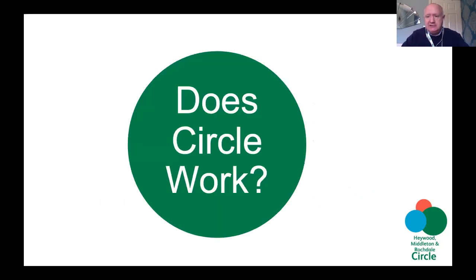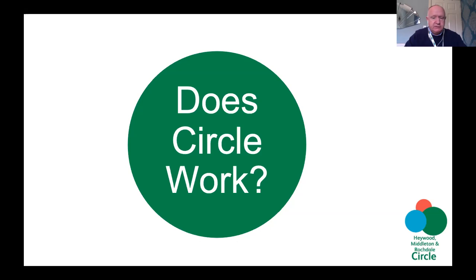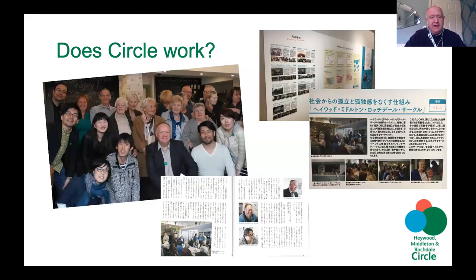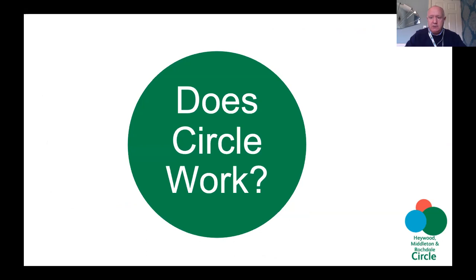What drove them to data was being contacted by a university studying social isolation among older people, who said Circle was the best example they could find worldwide — and this was just four people based in an office on Oldham Road in Rochdale. The University of Osaka in Japan flew in, came and saw what they did, and wrote a glowing report — though it took two months to get it translated from Japanese. They said it didn't feel clinical — it was like walking into a group of friends on a social event. This planted the seed of 'does Circle work and how can we prove it?'